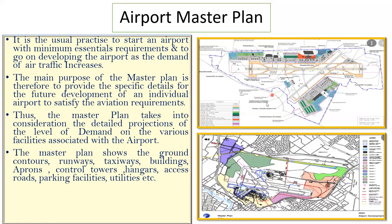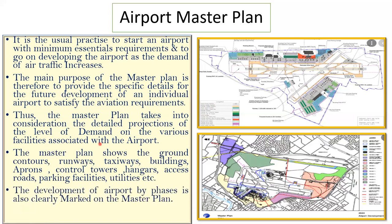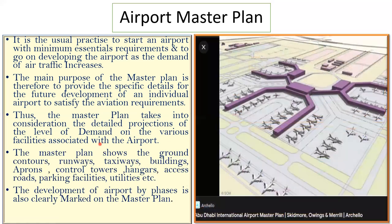This master plan shows everything — the ground contour, the runways (the runway is here in gray color, so that gray color is labeled as 'runway'), the taxiway, buildings, control towers — each and everything you are going to find it here. The development of an airport by phase is also clearly marked on the master plan. This particular example is the Abu Dhabi International Airport Master Plan, developed by Skidmore, Owings and Merrill, a very big construction company. This is a typical airport master plan.